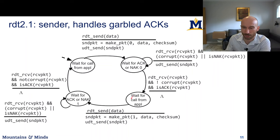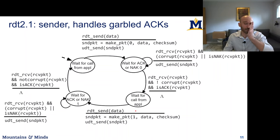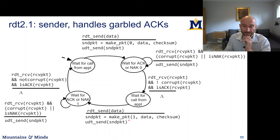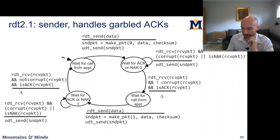We're in a symmetric case: now when the sender gets data from the application, it will create a packet with sequence number one and do basically the same thing as before on the other side of the finite state machine.